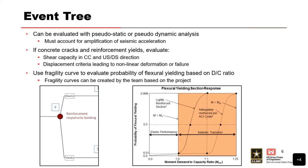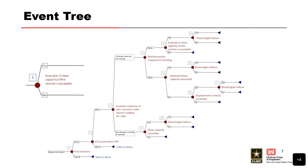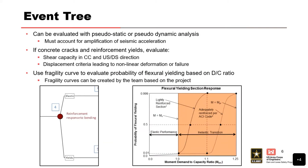For the reinforcement response, we use a fragility curve, which is shown here. Cody had it in his example problem. This is the fragility curve suggested in best practices, and it can be altered. There's quite a limited range going from virtually impossible to virtually certain — from a demand-capacity ratio of 1 to 1.25 for an adequately reinforced member, and even less of a range for a lightly reinforced section.